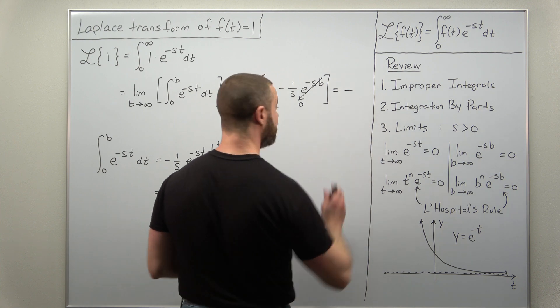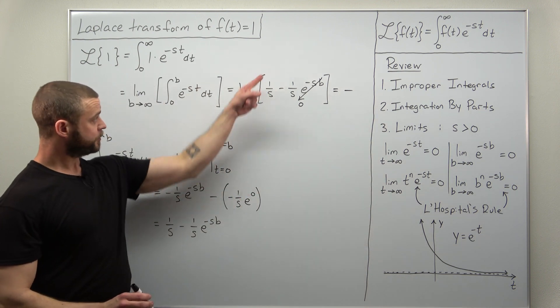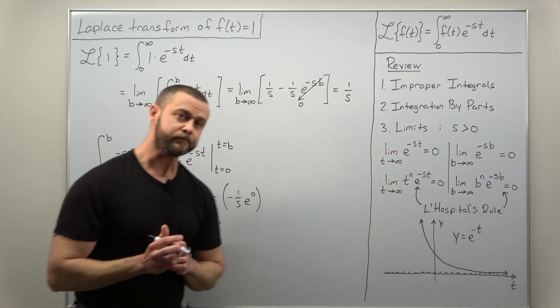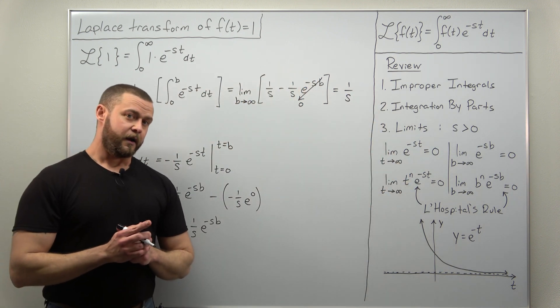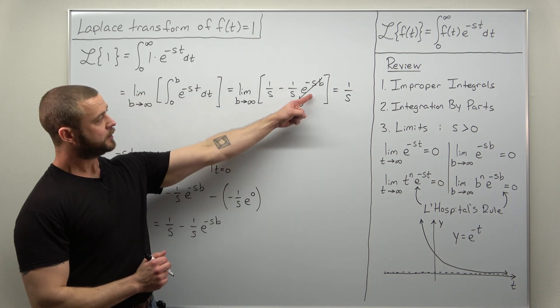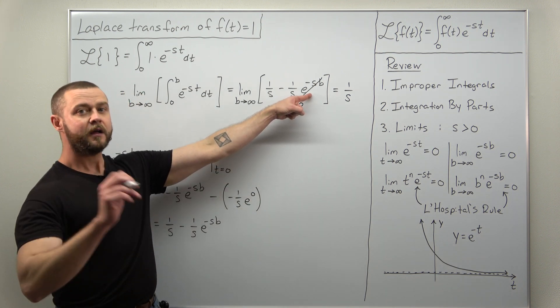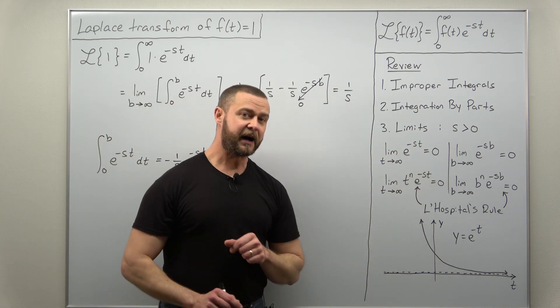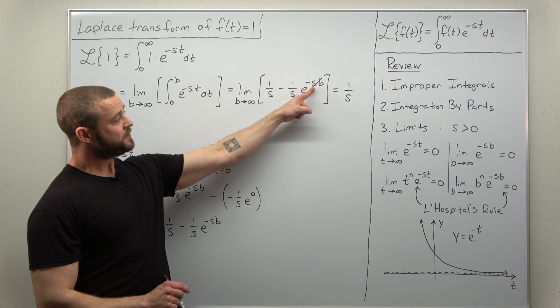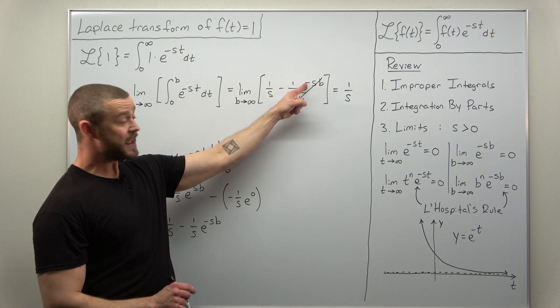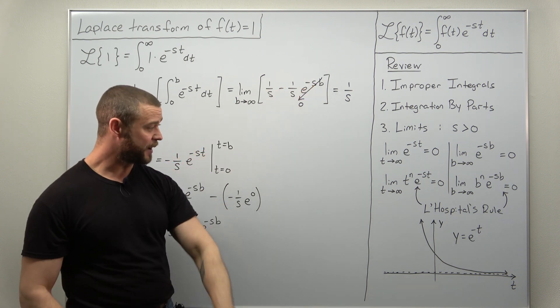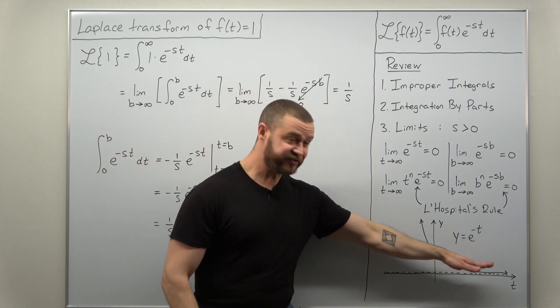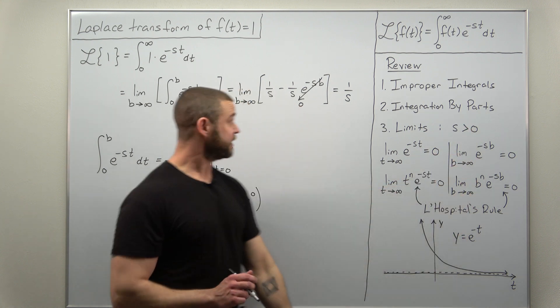And it looks like what we're going to be left with for the limit here is one over s. Now just to be technically correct, this term here that only approaches zero if s is positive. Notice if s is negative, that negative in front times a negative would become positive, and that would change it from a decreasing exponential to an increasing exponential.